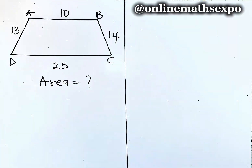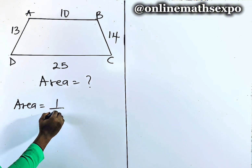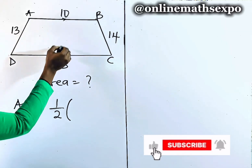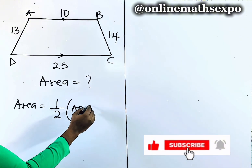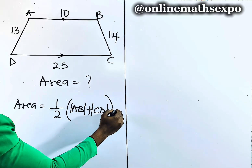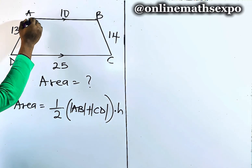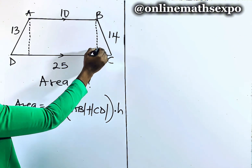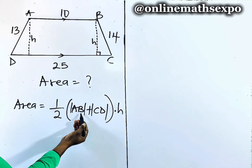For every trapezoid, the area is always given as half into the sum of the two parallel sides. So we have length AB plus length CD, and whatever value you have, you multiply it by the height. The height is the perpendicular height from the top down to the base line.